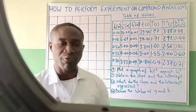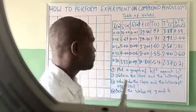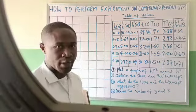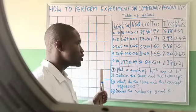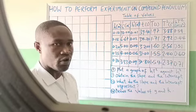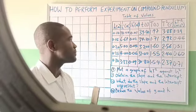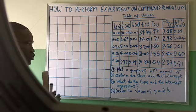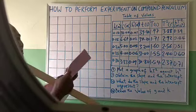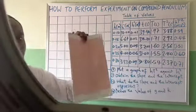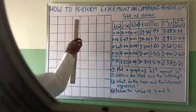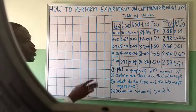Welcome to today's class on practical physics. In this video we want to see how to plot the graph of the values of the readings we got from an experiment on compound pendulum. We have shown how we derive these values in a previous video on our channel. Now we want to see how to do the plotting. We'll be using a sketch of a graph sheet to do that, because we can't paste a standard graph sheet here and plot so you can see it very well.